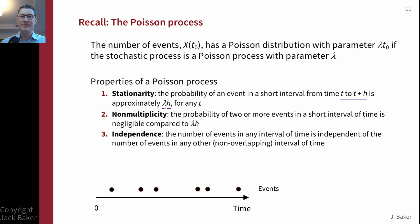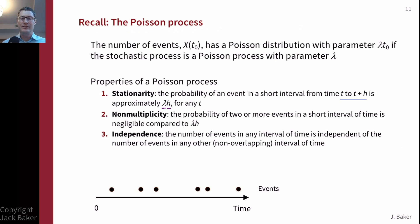The second property is non-multiplicity: we can't have two simultaneous events. Either no events or one event happens in a small interval of time — the probability of two events in a very short interval is negligible. The third is independence: the number of events in non-overlapping intervals is independent, so knowing what happened in the past doesn't influence what could happen in the future. Those are the three mathematical conditions for processes with a constant rate of independent events.